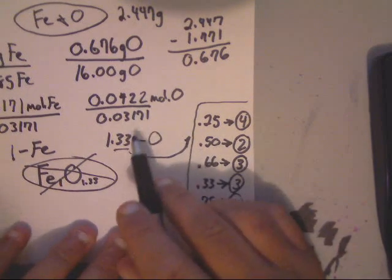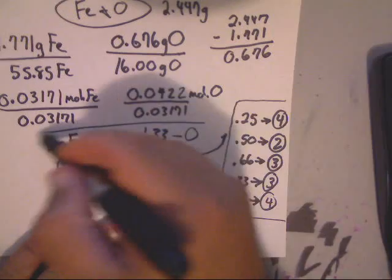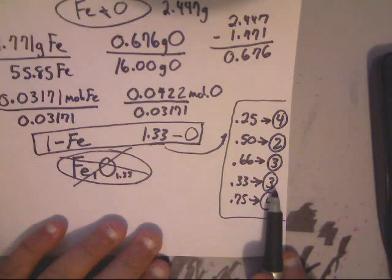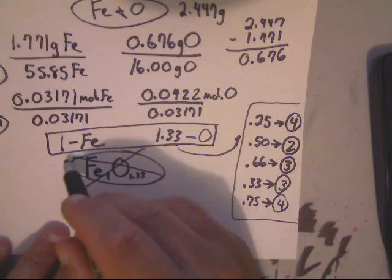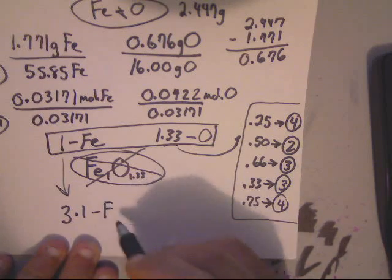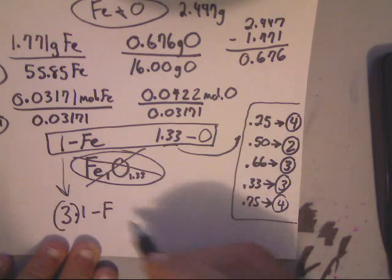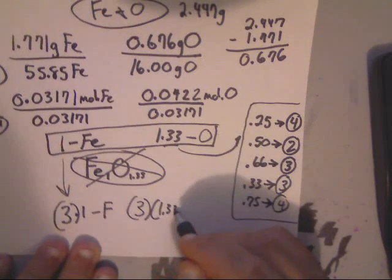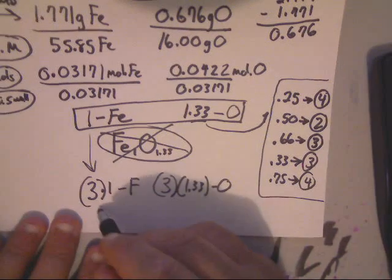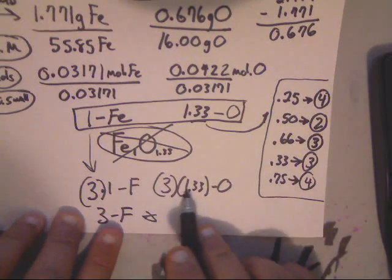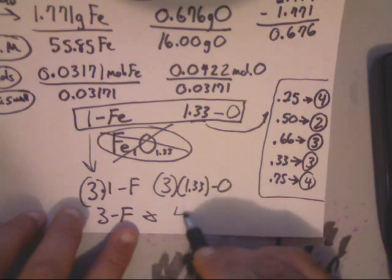Anyway, what I need to do then is I need to multiply all of this by 3. So that means that this then should be 3 times 1 for my Fe. And I should be multiplying this by 3 for my oxygen. Now that would give me 3 of my Fe. And that would give me basically 3.99, which is the number 4.